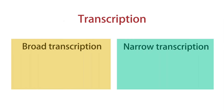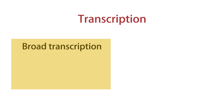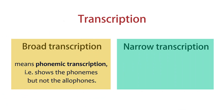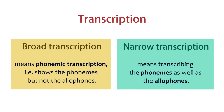There are two ways of transcribing sounds: broad transcription and narrow transcription. In broad transcription you don't provide much detail — you only write the primary sound symbols. In other words, broad transcription is phonemic transcription: we just write the phonemes of the given language. Narrow transcription means transcribing the phonemes as well as the allophones.